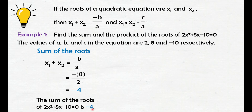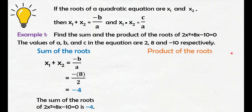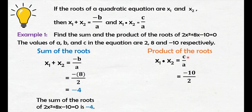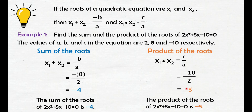We got the sum of the roots of the quadratic equation without needing to actually solve for the roots first — we used a shortcut. Next, the product of the roots. Given the formula, when we multiply the two roots, we get c over a. Substitute the value of c and a: c is negative 10 and a is 2. Negative 10 divided by 2 is negative 5. So, the product of the roots of 2x squared plus 8x minus 10 equals 0 is negative 5.